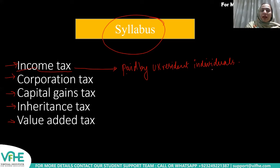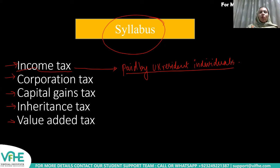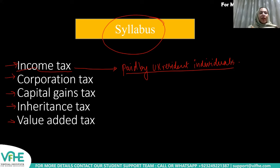What could be the primary sources of income through which an individual receives income? When someone is receiving income, you might think of rental income if a person has let a property, dividend income if they've invested in shares, employment income or salary if they have a job, pension income if they've reached retirement age, and business profits if they are running a business.